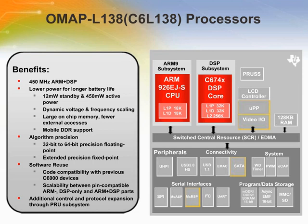The OMAP-L138 is a low-power applications processor based on an ARM 926EJ-S and a C674X DSP core. The dual-core architecture provides benefits of both DSP and RISC technologies, incorporating a high-performance TMS320C674X DSP core and an ARM 926EJ-S core. The C674X DSP combines the performance of the C64X+ core with floating-point capabilities and provides the extended precision necessary for high-precision logarithms on a variety of signed and unsigned 32-bit data types.